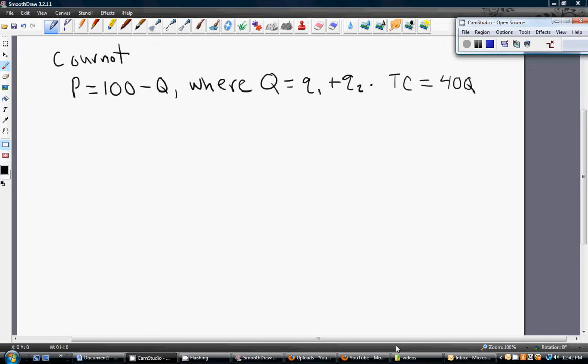Hello. In this video, I am going to demonstrate Curnot. Curnot is a model where we have, in this case, two firms producing identical goods. They're competing by setting output, and this output is set simultaneously.